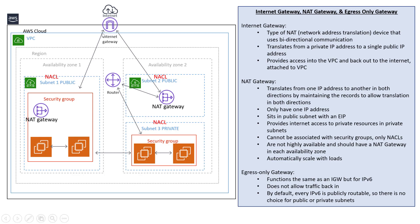It will get to the internet gateway, and the internet gateway will see that this resource has a public IP address attached to it. What will happen is the internet gateway will switch out the private IP address for the public IP address to go out. It works in a bidirectional way — when the public IP address comes back in, it will swap it back out for the private EC2 instance address.